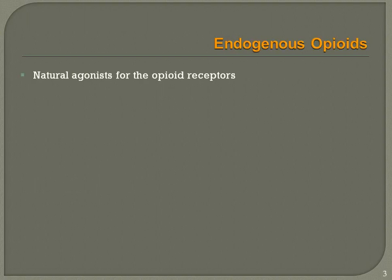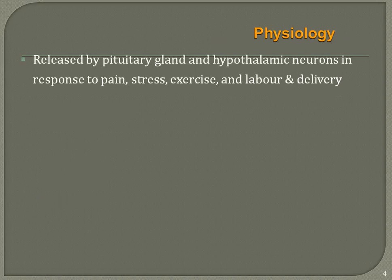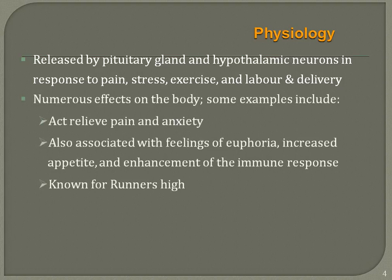Endogenous opioids are natural agonists for opioid receptors, commonly known as endomorphins — short for endogenous morphine. There are three to four types: endomorphins, enkephalins, dynorphins, and nociceptin. Physiologically, they are released by the pituitary gland and hypothalamic neurons in response to pain, stress, exercise, and labor and delivery.